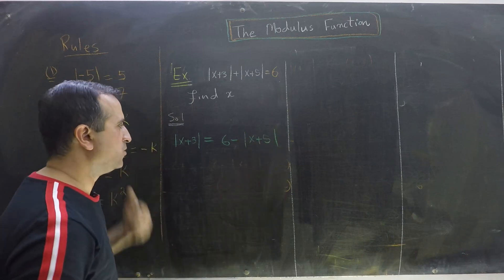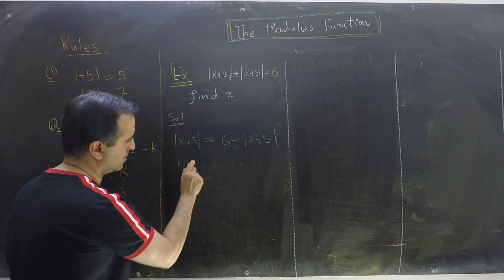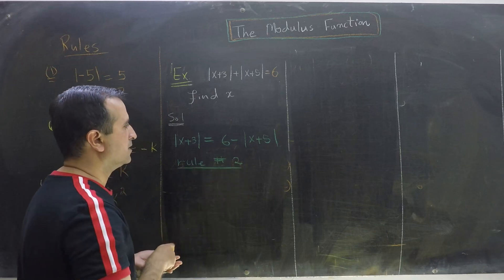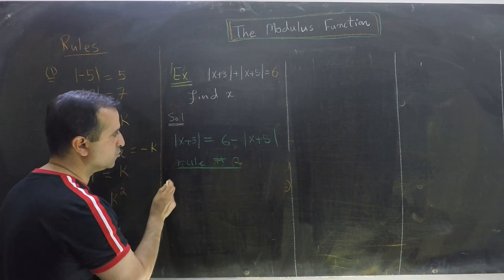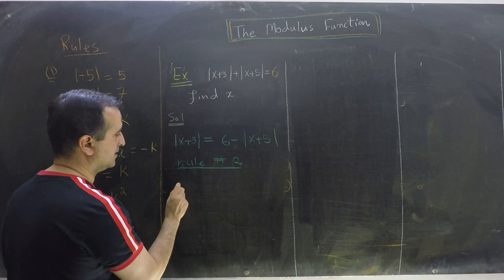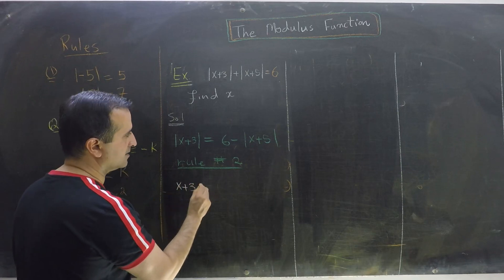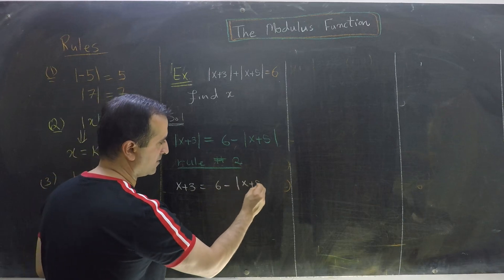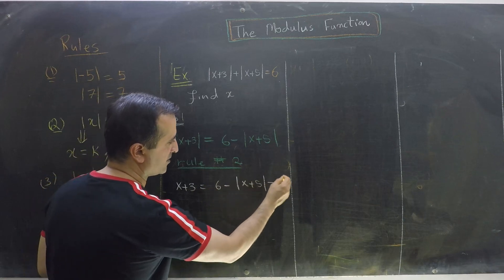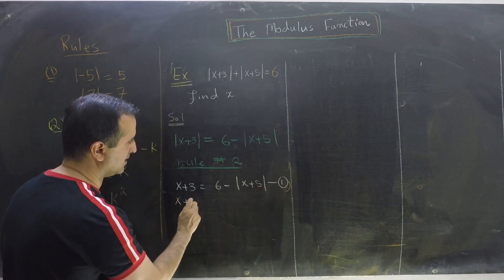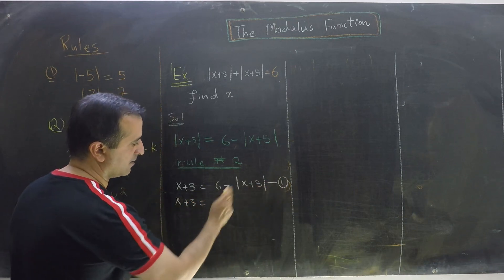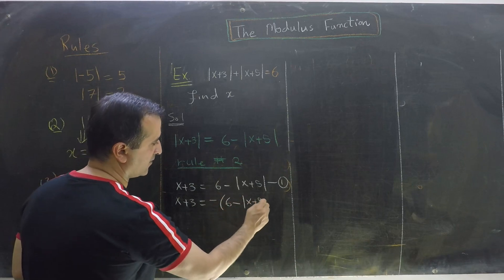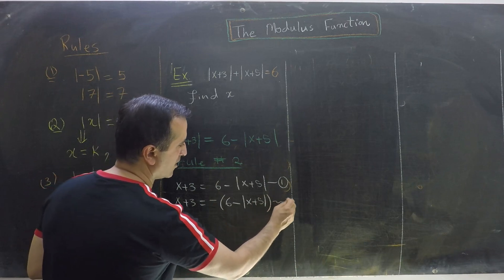Now I can apply Rule Number 2. According to Rule Number 2, this has two possible forms: x plus 3 equals 6 minus mod of x plus 5 — let's call this Equation 1 — and x plus 3 equals minus of (6 minus mod of x plus 5) — let's call this Equation 2.